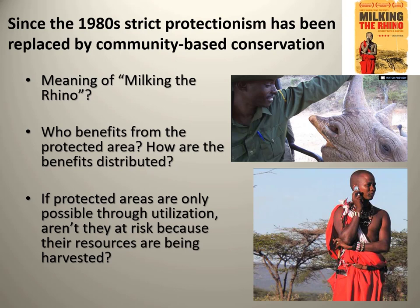In all these cases of footage of wild Africa, there are people there in every single case. People have been part of these environments for two million years. If protected areas are only possible through the utilitarian, instrumental approach to biodiversity, aren't they then at risk of being over-harvested or used in an unsustainable way since the resources can be used?